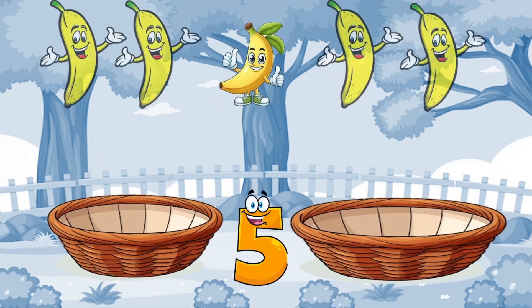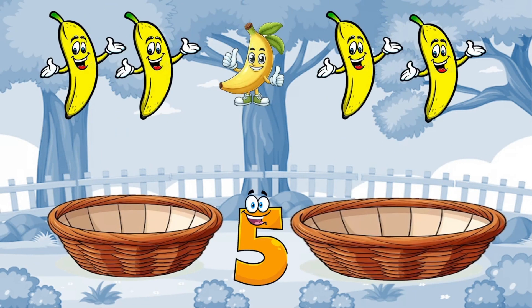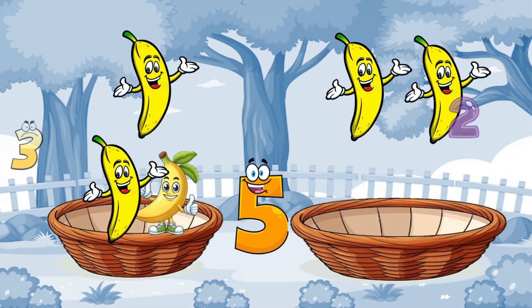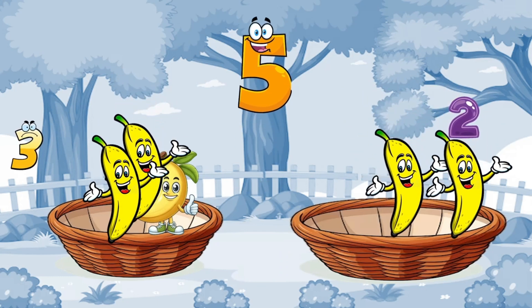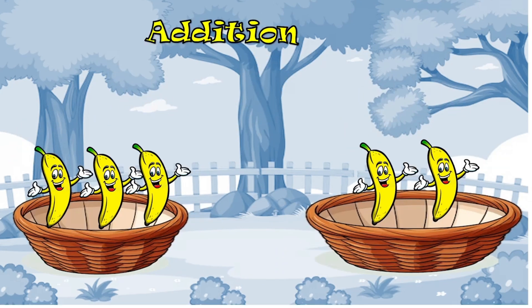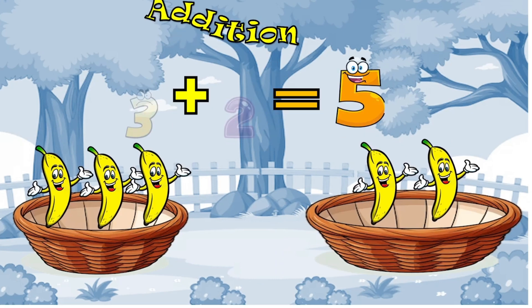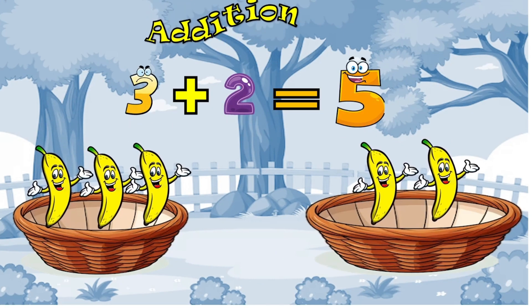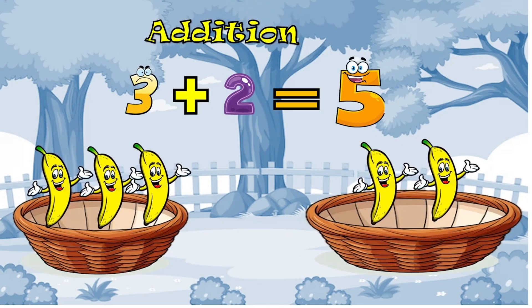These are some bananas. How many bananas are there? 3 plus 2 is equal to 5. 3 plus 2 is 5. This is addition.